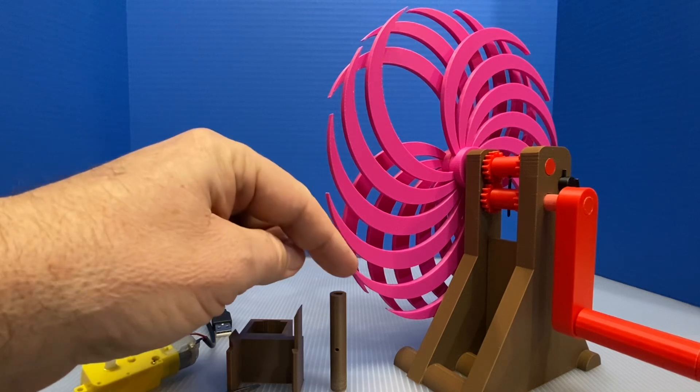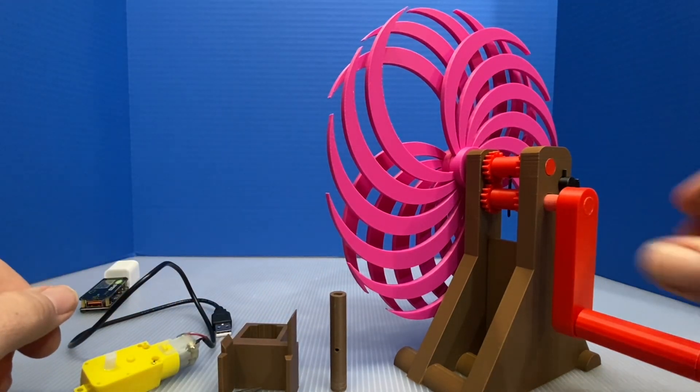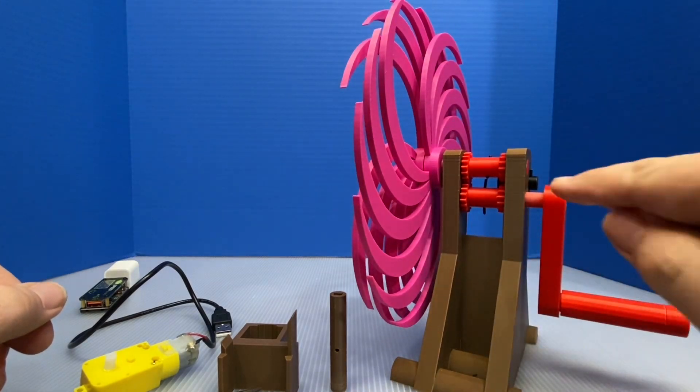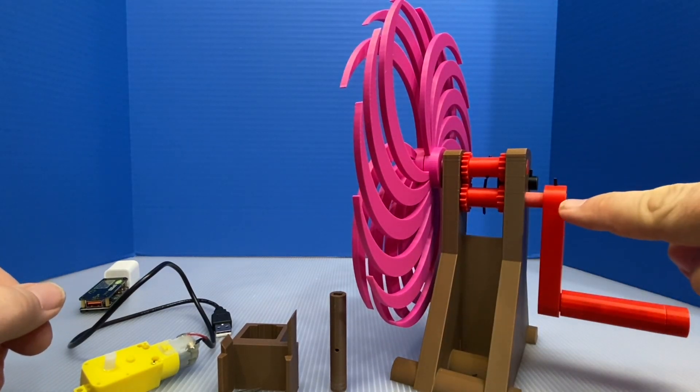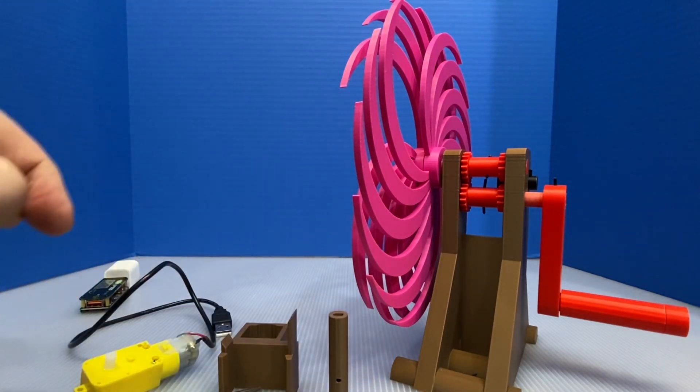The conversion kit is these two parts. You have a new shaft and then a motor bracket, and what we're going to be doing is we're going to pull this shaft and the handle out. We're going to be putting this shaft in and then we'll mount the motor.